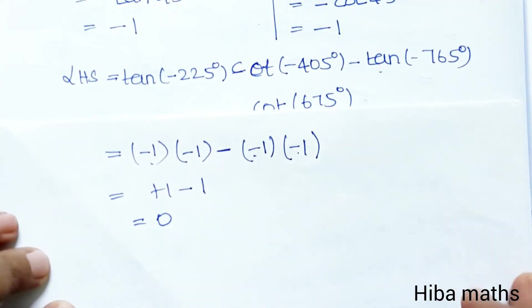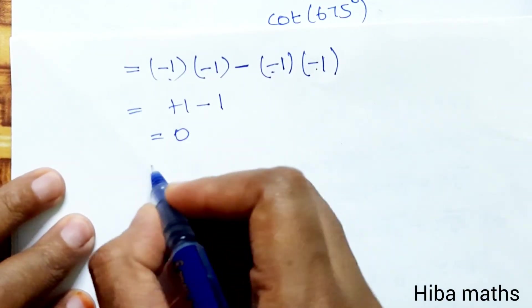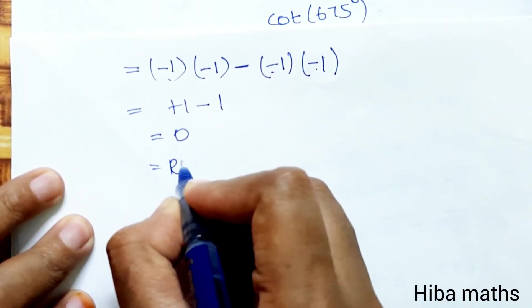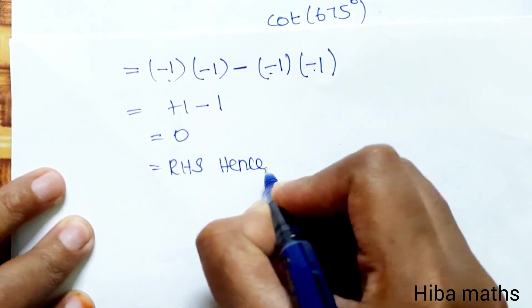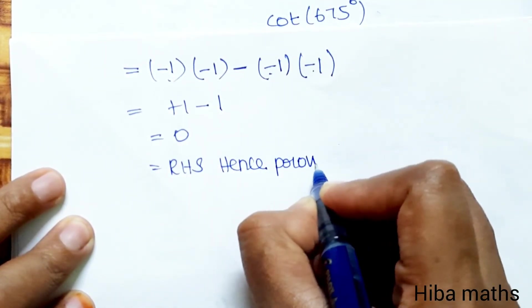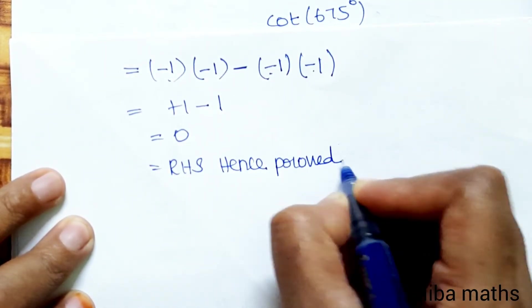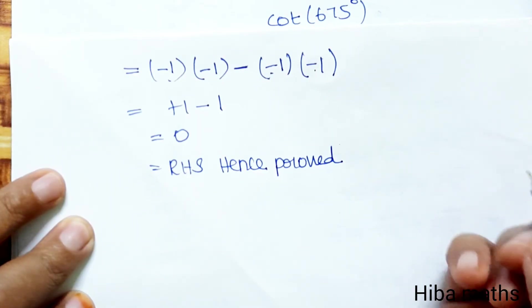This equals 0, which is our RHS. Therefore LHS = RHS, hence proved. If you have any doubts, leave them in the comment section. Thank you so much for watching.